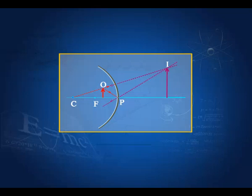This is the object — the red one. We have a ray from the center of curvature which goes undeviated, and a ray which falls on the mirror at P and gets reflected according to the laws of reflection. These two rays are diverging and appear to meet at the point I. So I is the image of O, and you can see that this image is formed behind the mirror. It is a virtual image, erect and magnified.